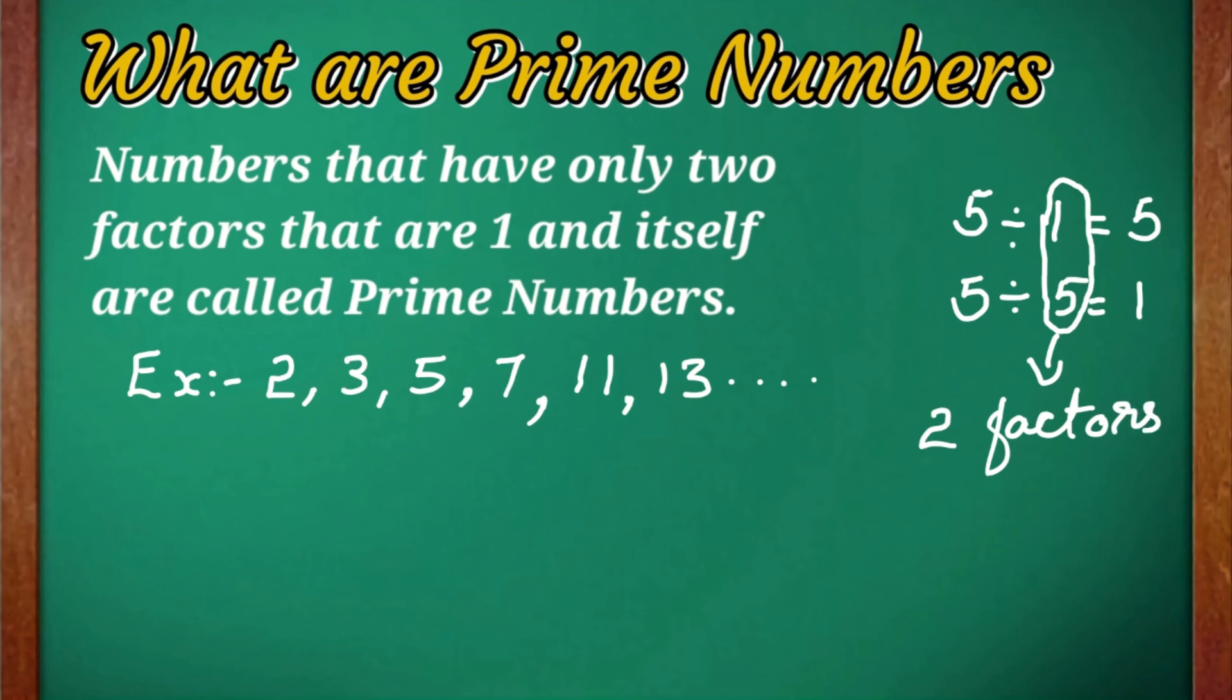If we talk about the other numbers, all of them have two factors: 1 and itself. So these numbers are called prime numbers. Any number that has only two factors, 1 and itself, is called a prime number. I hope you all have understood what prime numbers are.